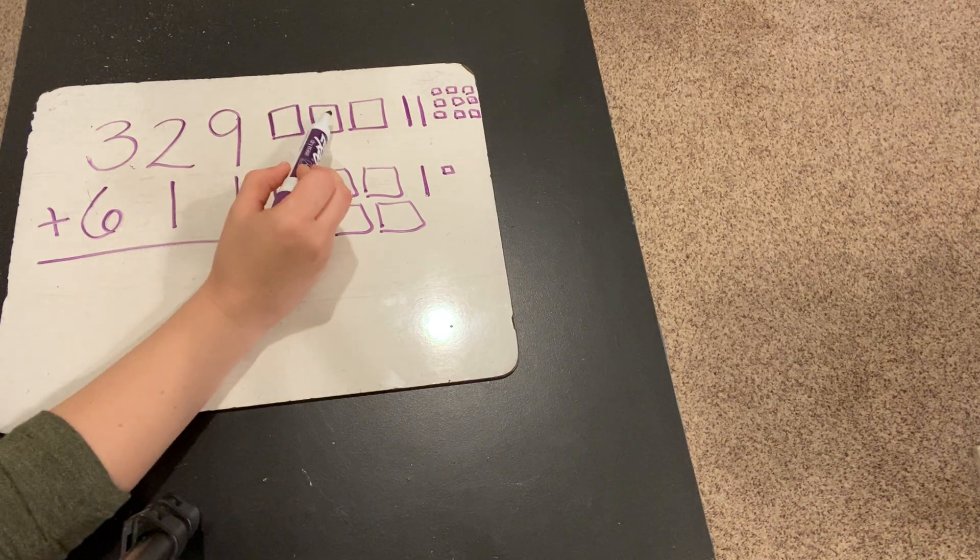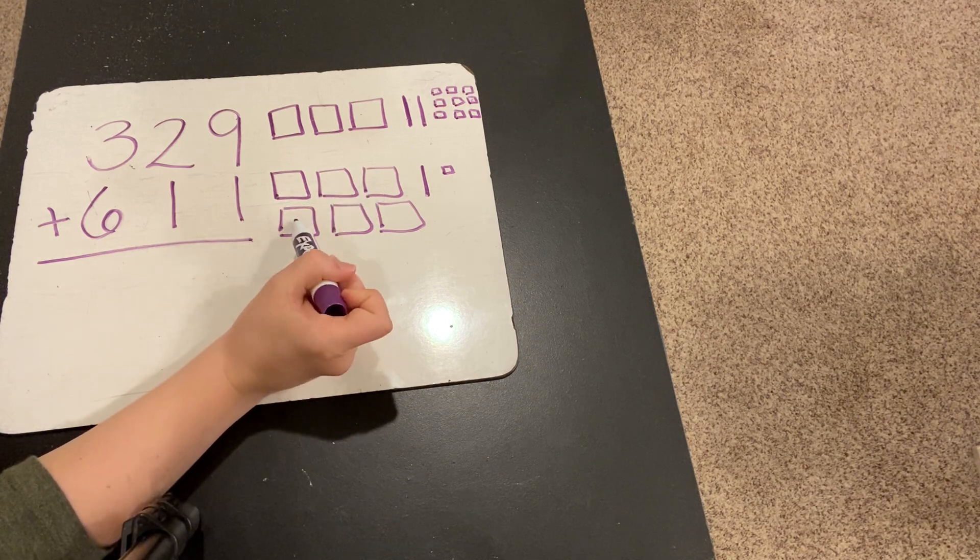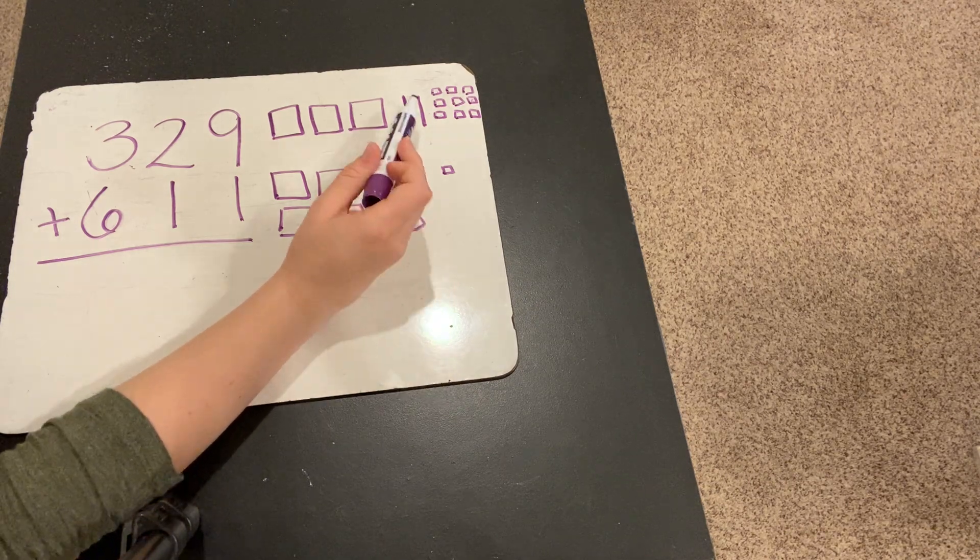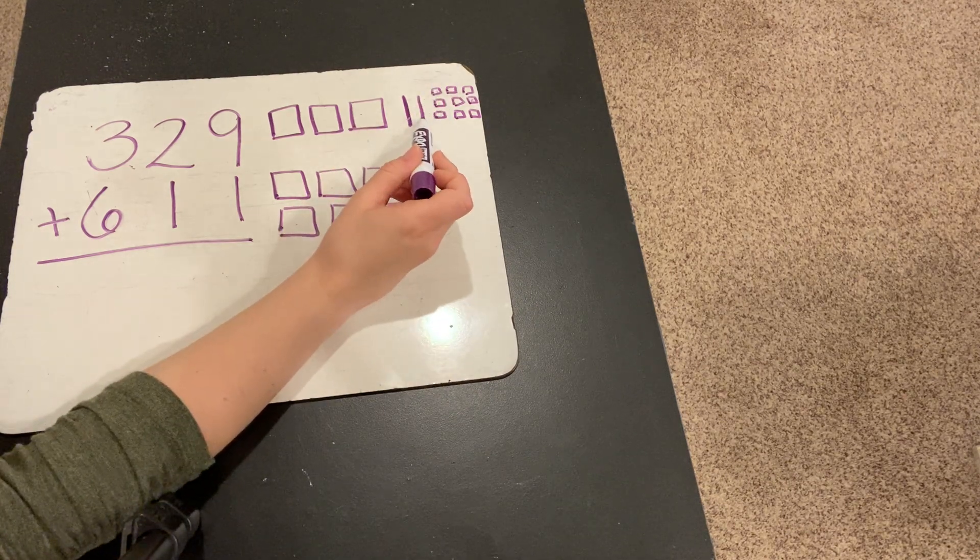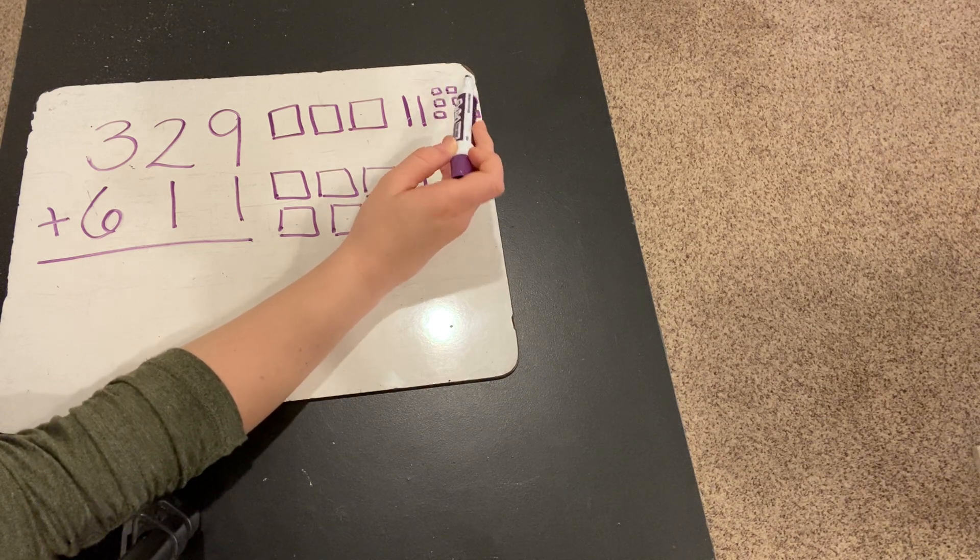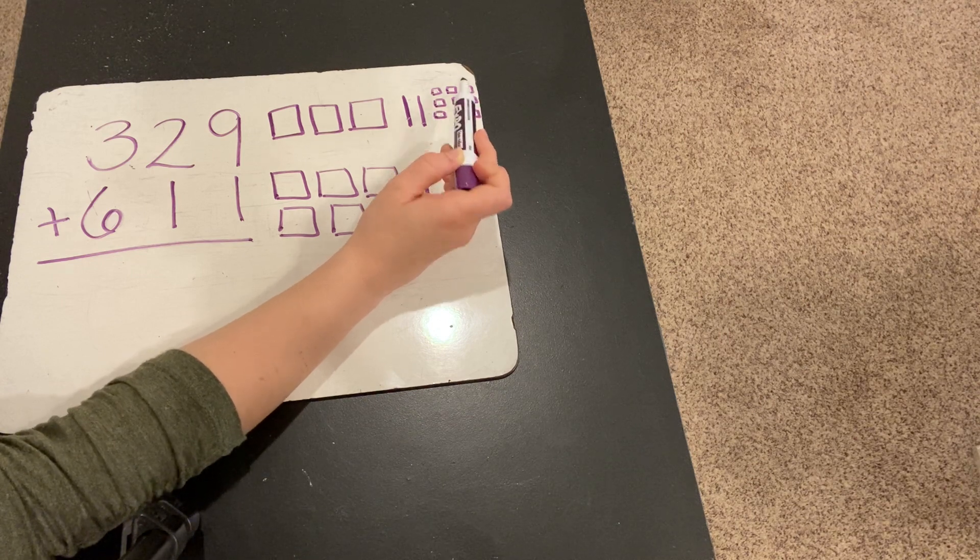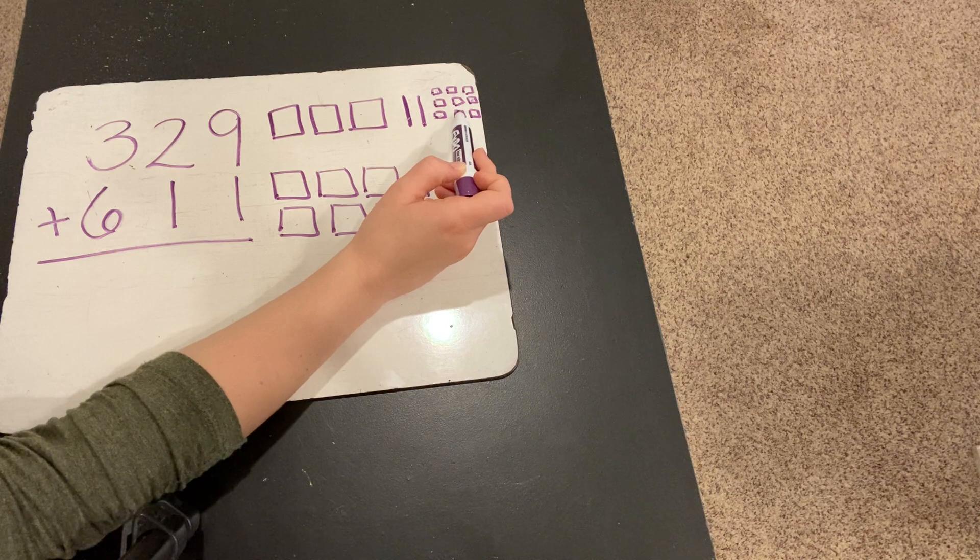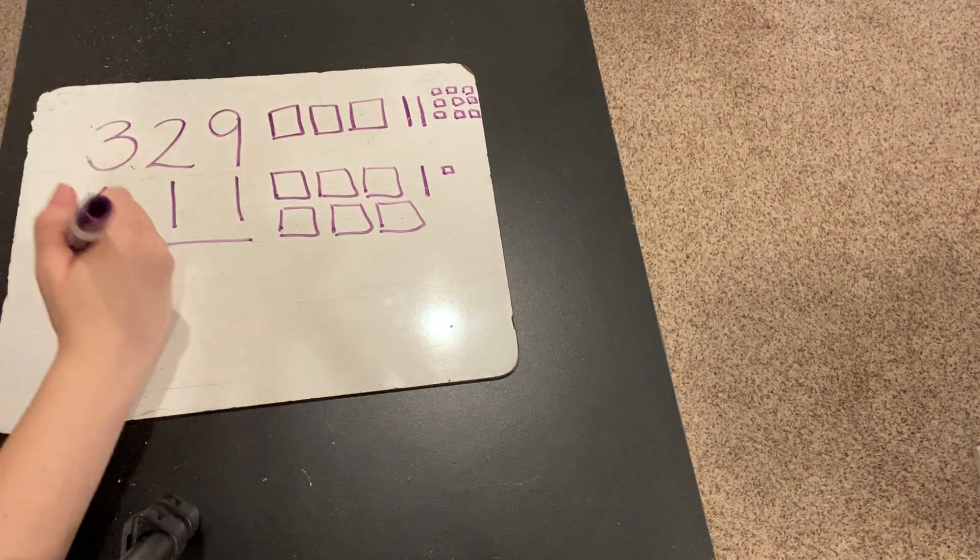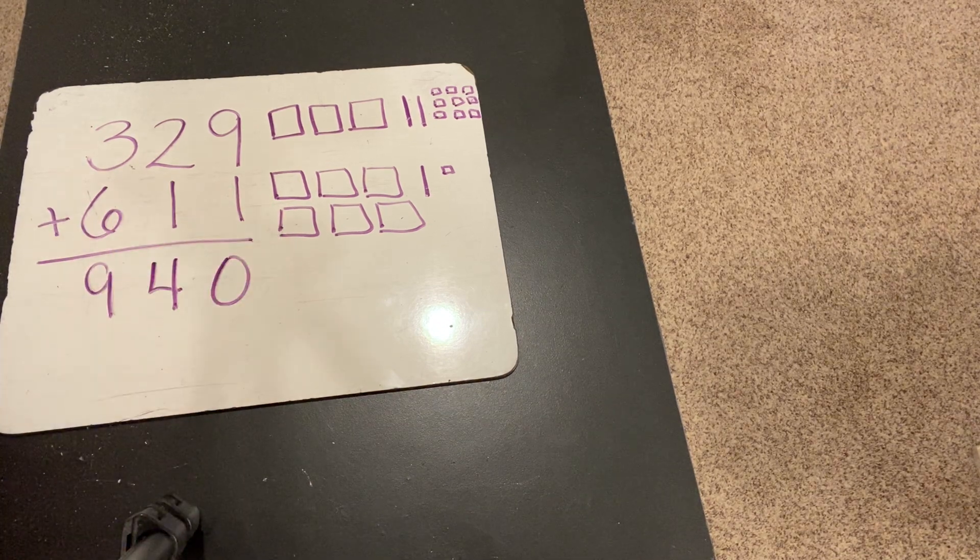100, 200, 300, 400, 500, 600, 700, 800, 900, 910, 920, 930, 931, 932, 933, 934, 935, 936, 937, 938, 939, 940. So, 329 plus 611 is 940.